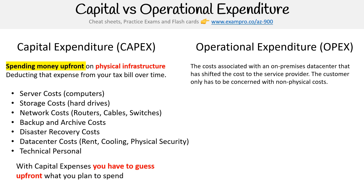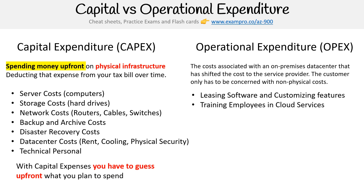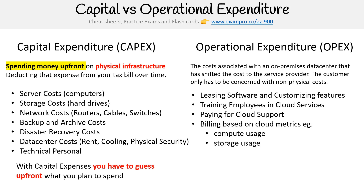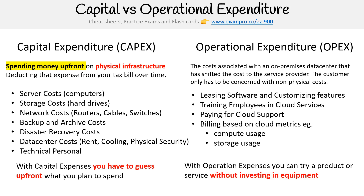Examples of OPEX costs include leasing software and customizing features, training employees in cloud services, paying for cloud support, and billing based on cloud metrics such as compute usage and storage usage. The advantage here is that with operational expenses, you can try a product or service without investing in equipment, so we have flexibility of investment. And from the previous slide, we saw a huge reduction in cost. So those are two really good reasons to use the cloud.